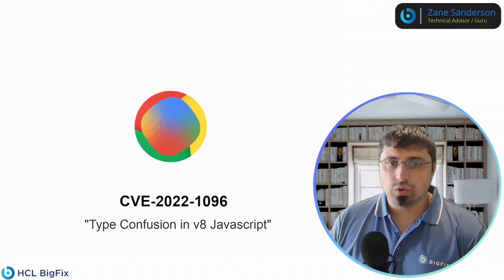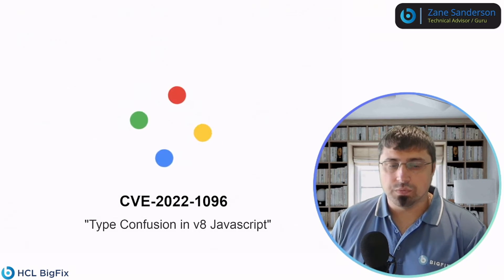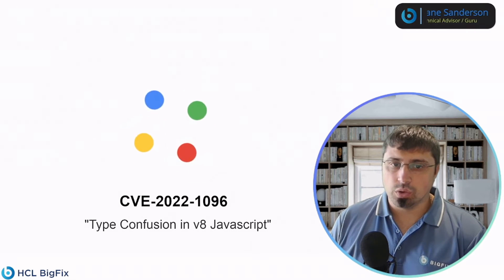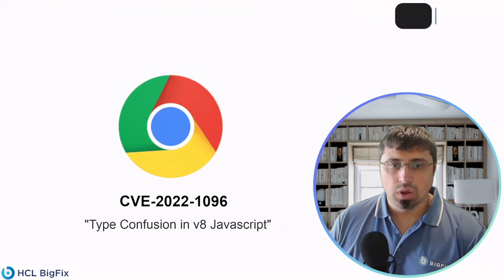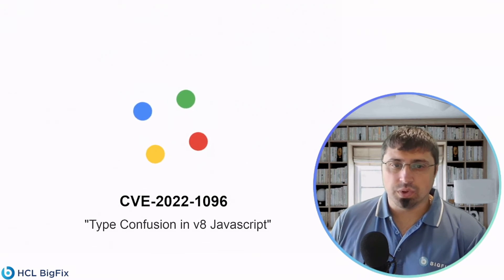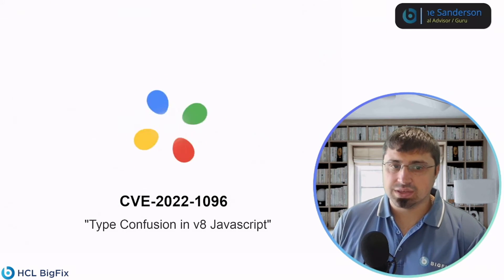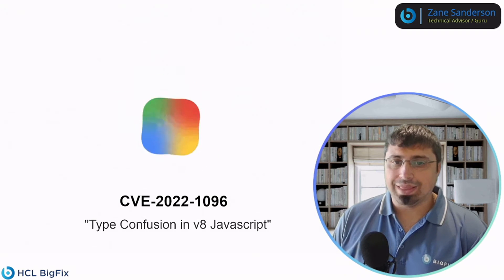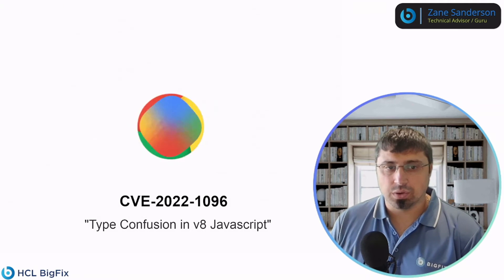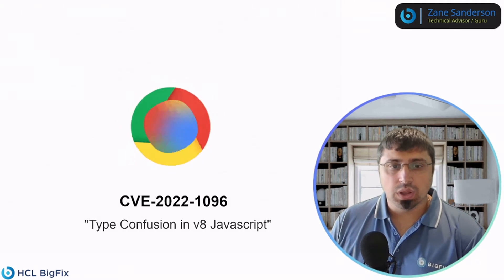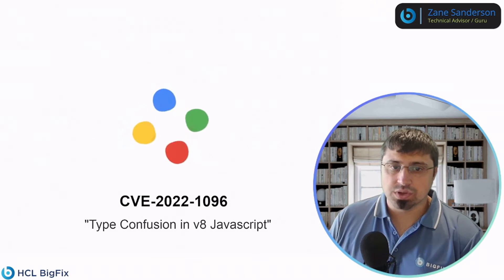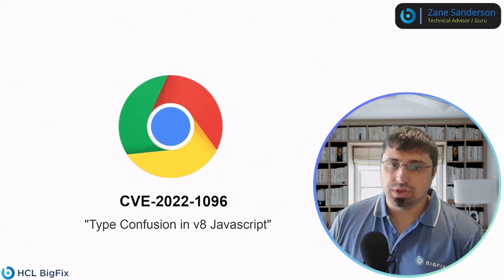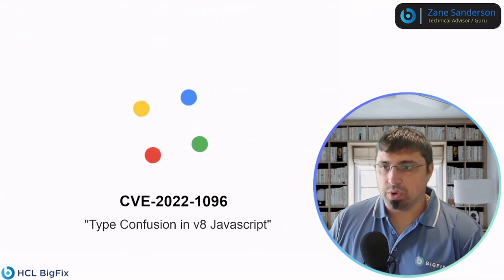This new vulnerability is a type confusion vulnerability, specifically in the V8 JavaScript engine that Chrome uses. Type confusion vulnerabilities can allow attackers to access data in an unauthorized way, allowing the execution of malicious code. Languages such as C and C++ that don't have memory safety guards could be exploited to lead to out-of-bounds memory access.